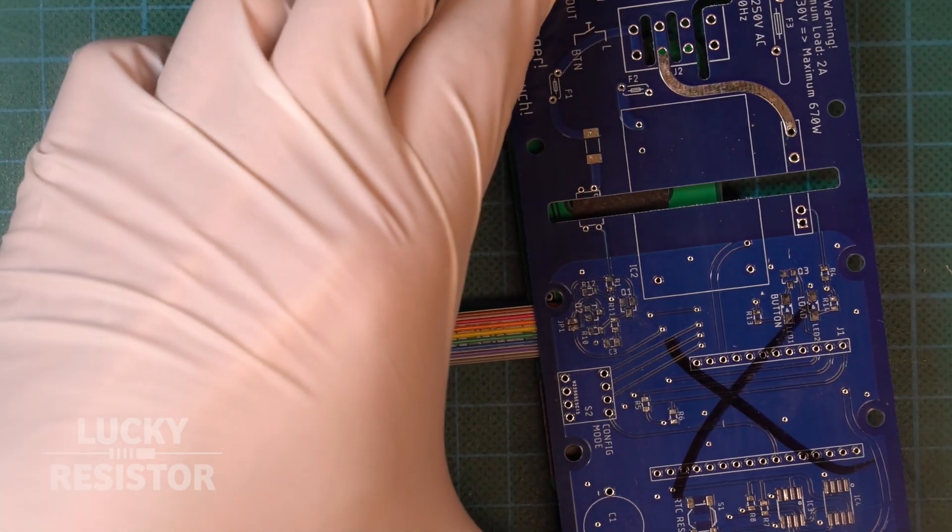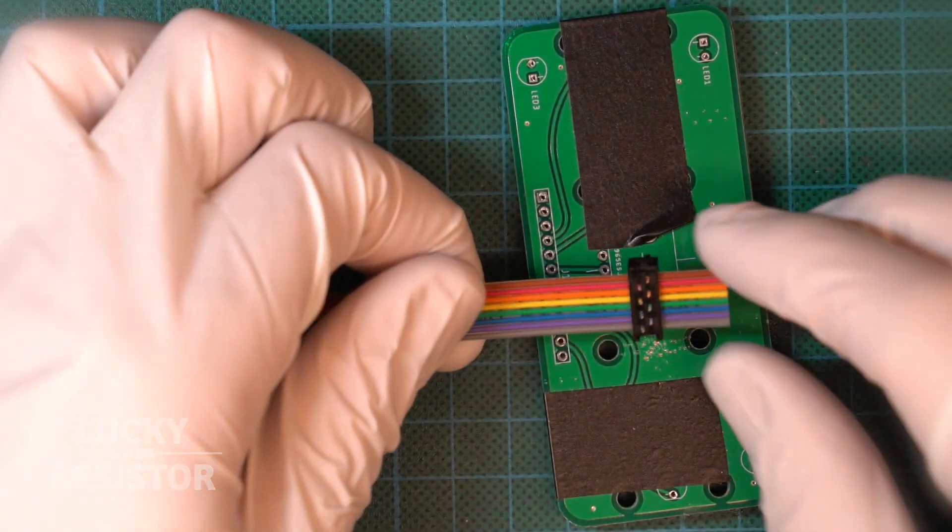Use a hammer with two or three smooth, well-placed hits to press the ribbon cable into the connector.